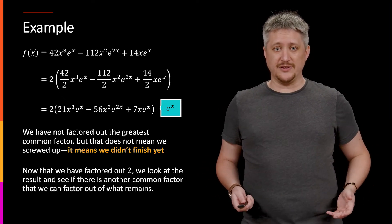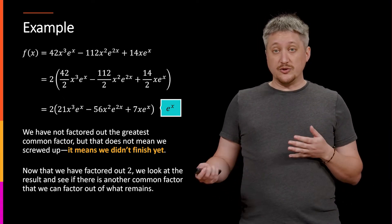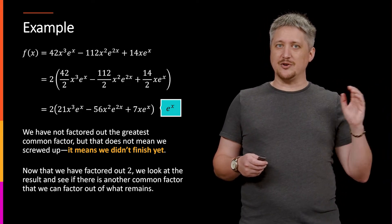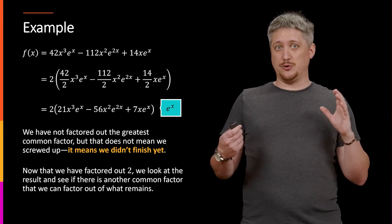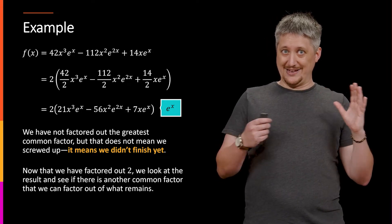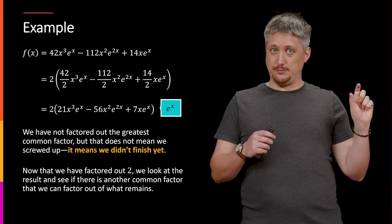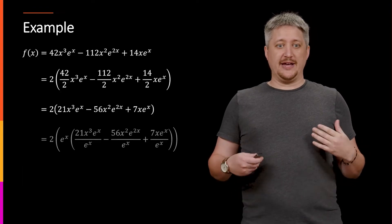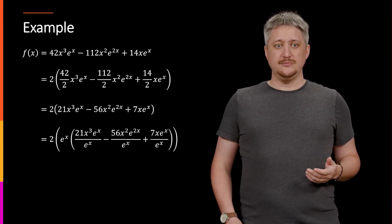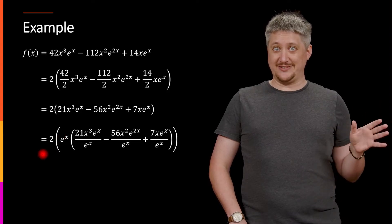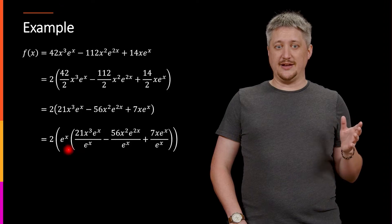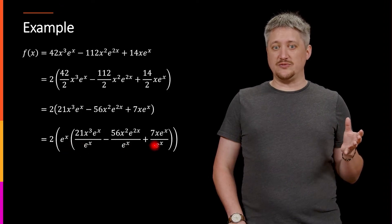Maybe I notice e^x is on all of these. So I'm going to do the same thing I just did only now I have a 2 floating out and then I'm going to have the e^x pulled out as well. But I don't necessarily need to put it with the 2, I'm going to have nested parentheses. So I'm going to have something like this. I don't want to forget the 2, I need to make sure that sticks around, but right now I'm just factoring out the e^x and again I can think of it as dividing out each of these.